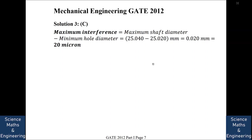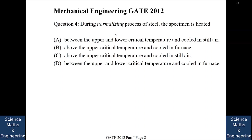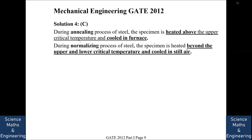During the normalizing process of steel, the specimen is heated above the upper critical temperature and cooled in still air — answer C. During full annealing, the specimen is heated above the upper critical temperature and cooled in a furnace. The key difference is that annealing involves slow cooling in a furnace whereas normalizing uses still air, making it faster cooling.